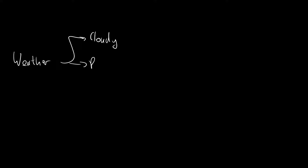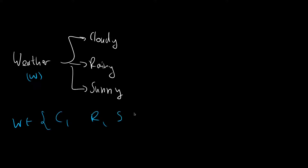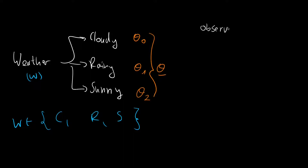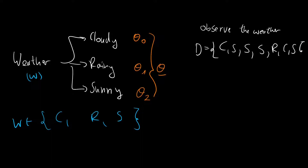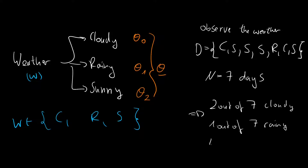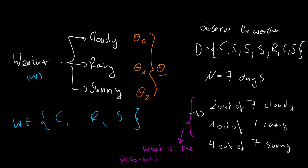You model the weather to either be cloudy, rainy, or sunny. So weather W is one of three states. You know the probability of each of the events. Then you observe the weather and you observe cloudy, sunny, sunny, rainy, cloudy, sunny — seven days in total. Two out of seven are cloudy, one is rainy, and four are sunny. But what is the probability for this? For this we need a multinomial distribution, which we will introduce in this video.